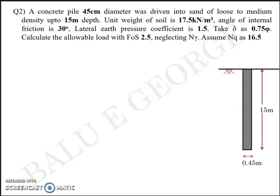You're asked to calculate the allowable load quite similar to the previous question with a factor of safety of 2.5, neglecting Nγ and assuming Nq at 16.5. So in the previous question we didn't take Nq, we didn't take Nγ because it was pure clay. In this particular question it's pure sand so you can avoid any term that has c. So the first term c·Nc gets cancelled out and you're asked to neglect Nγ. So all you have to do is to take Nq term and Nq is already given in the question as 16.5.